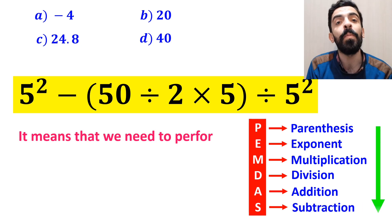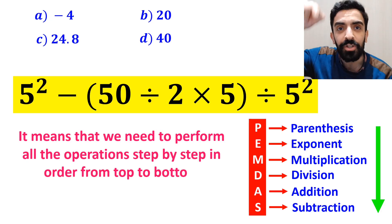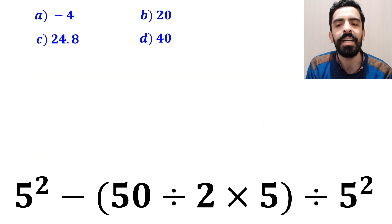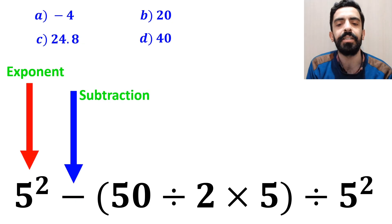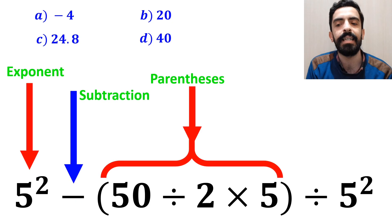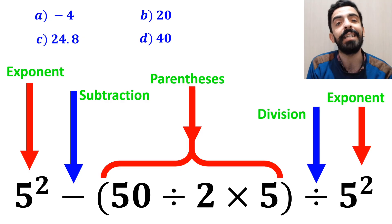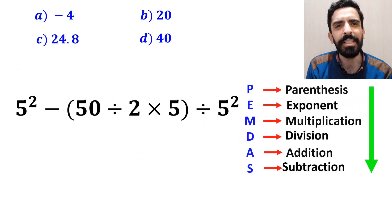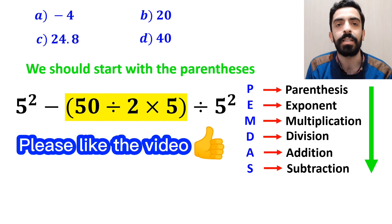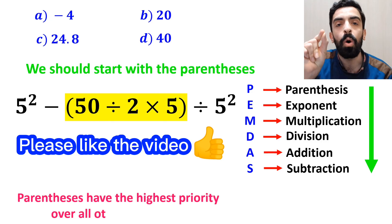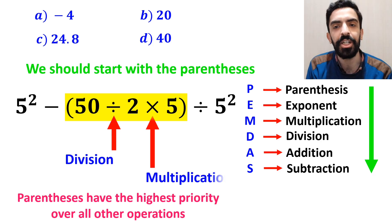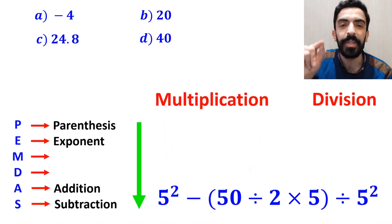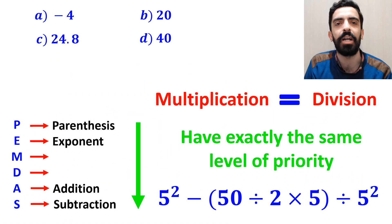As you can see on the screen, in this expression we first have an exponent, then a subtraction sign, followed by parenthesis, then a division sign, and finally another exponent. According to the PEMDAS rule, we should solve the parenthesis first, because parenthesis have the highest priority over all other operations. Inside the parenthesis, we have a division sign and then a multiplication sign. It's very important to note that multiplication and division have exactly the same level of priority.